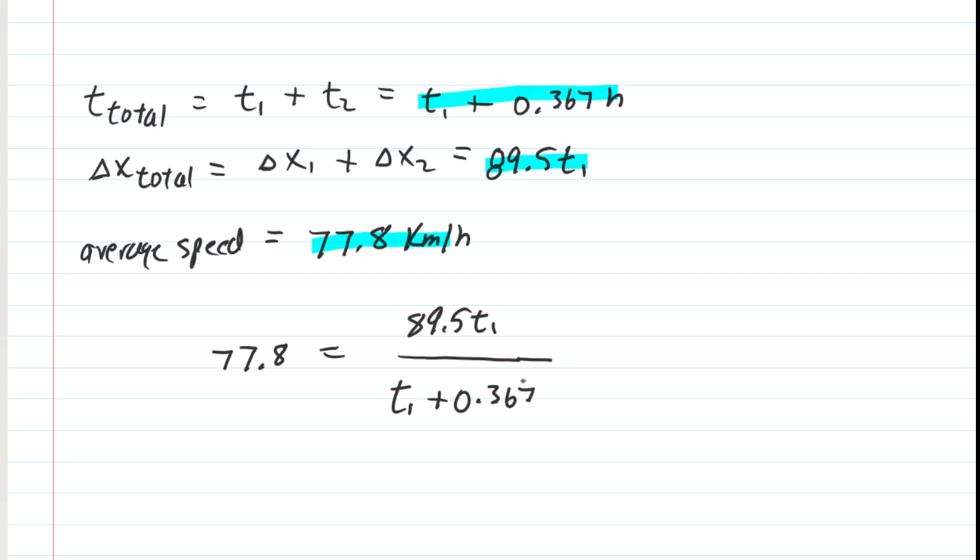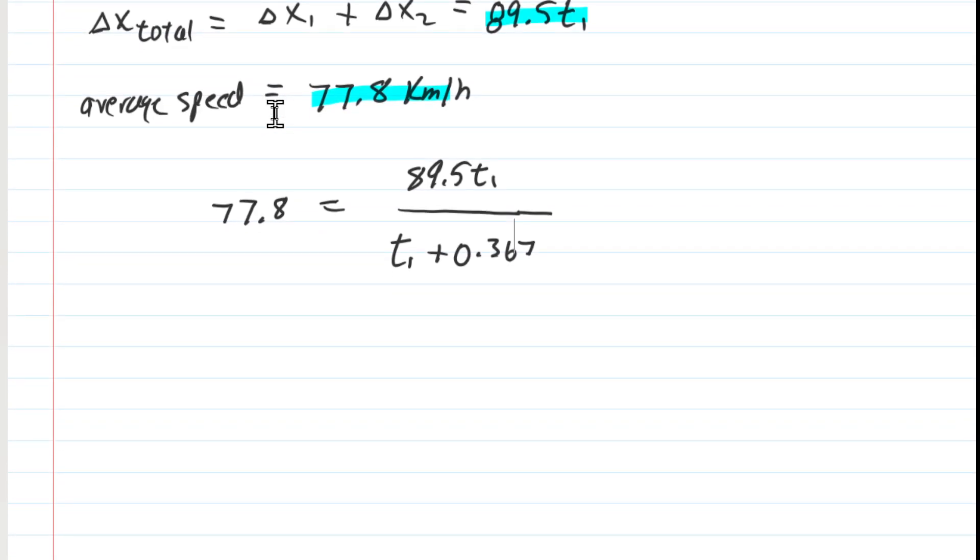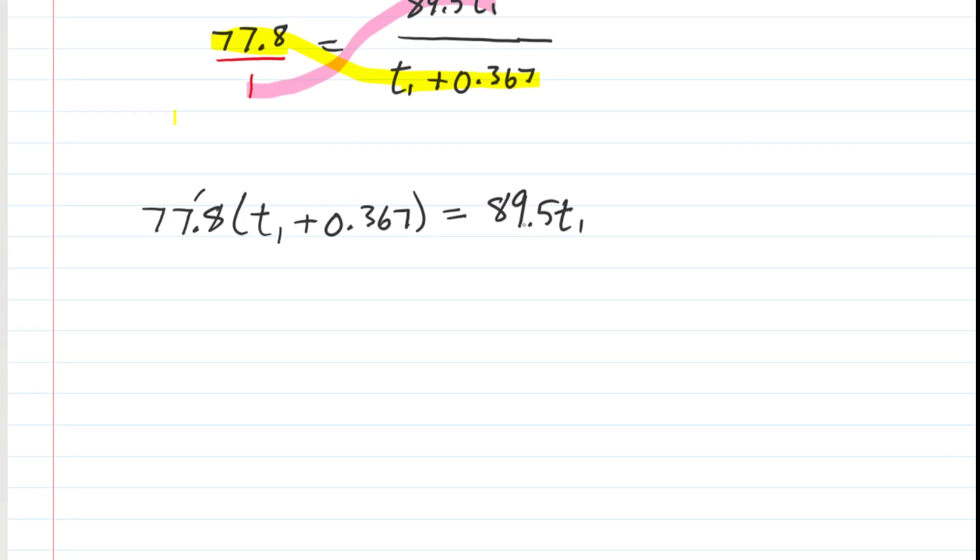So now it's a matter of just solving for T1. We move from physics to the realm of algebra. There's a couple of ways of thinking about that. One way would be to put the number on the left side over a one. And then perhaps you've learned in a math class to cross multiply. So you're going to multiply those two quantities together and then set it equal to the product of those two quantities multiplied together. Now our job is to try to continue solving for T1. We're going to go ahead and distribute the 77.8. So when we multiply it by T1, we'll have 77.8 times T1. And then when we multiply 77.8 times 0.367, we get about 28.53.